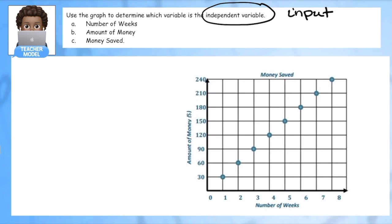So money saved is not an independent variable. It's what happens at the end. It is really my output. So which one, is it the number of weeks or is it the amount of money? Which creates the other one? So just looking at the table, I'm going to look at here's X and here's Y. So when there is one week, I want to put X as weeks. So when there is one week, I have $30.